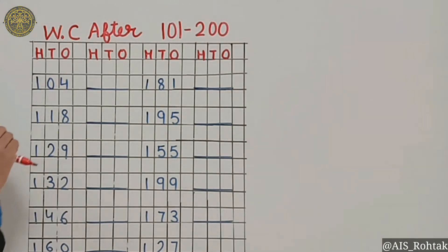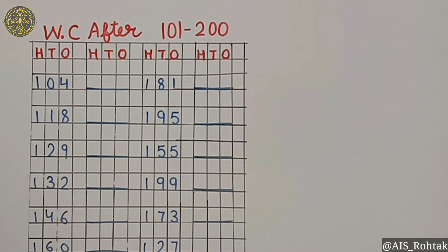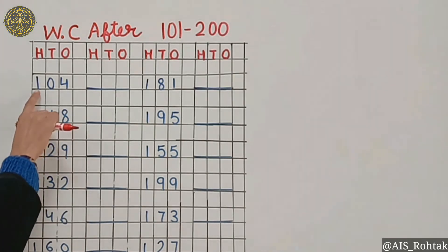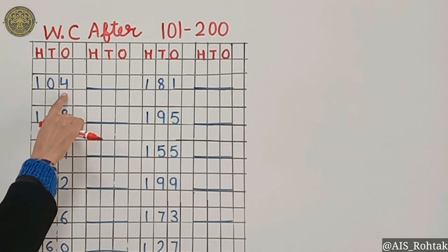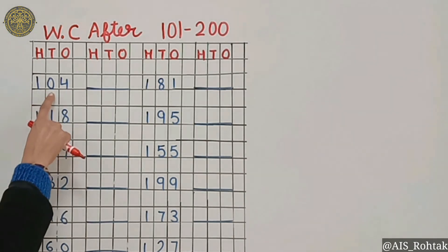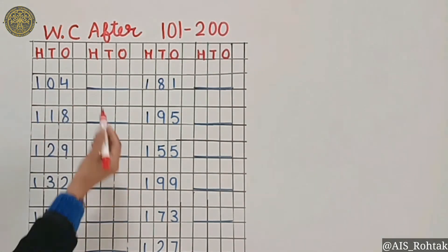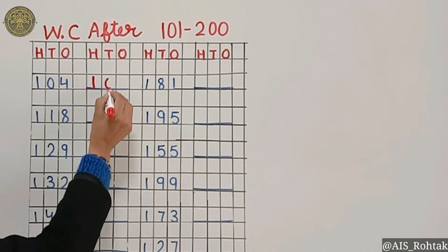In the first example, we have 104. Speak up the number line. 104 means this is the number line of 101. So 101, 102, 103, 104, and next is 105.